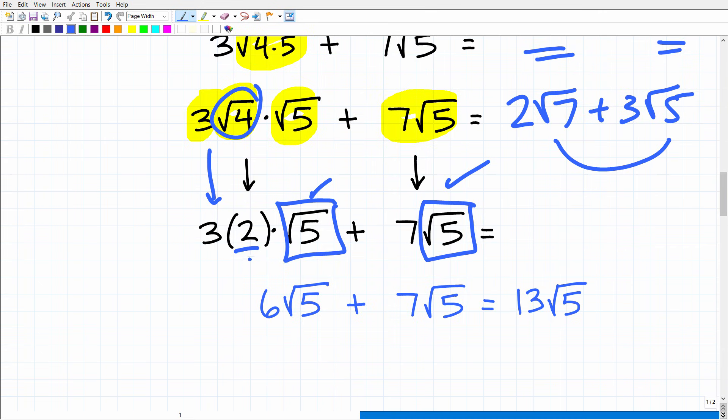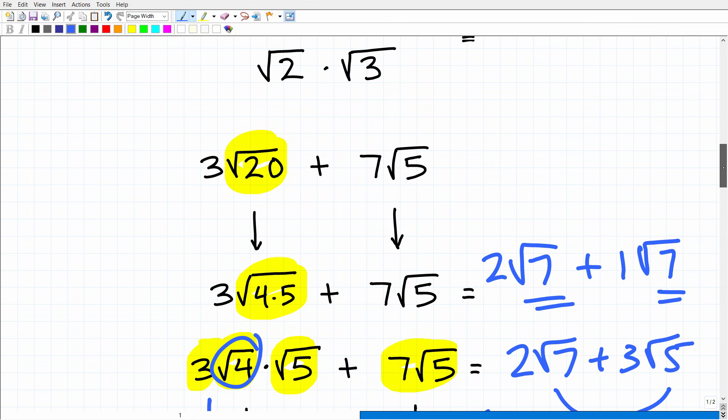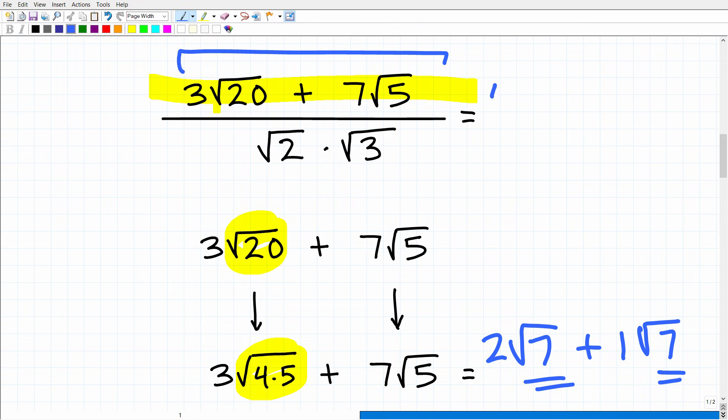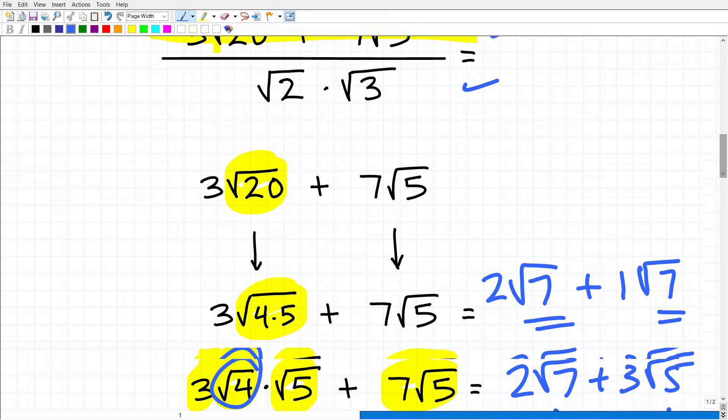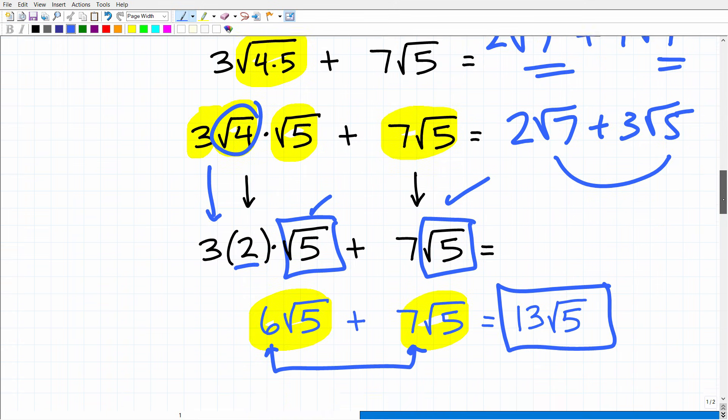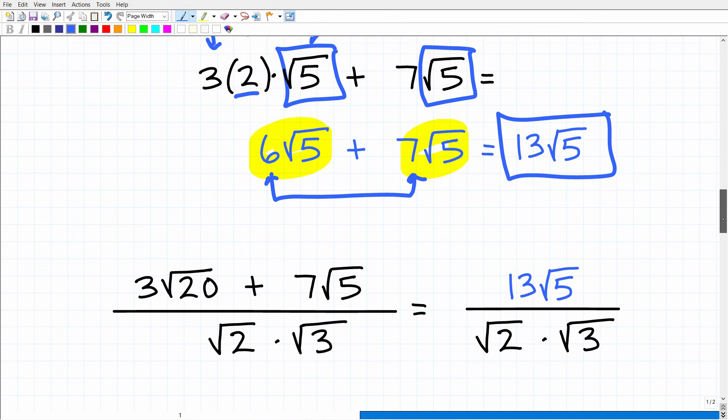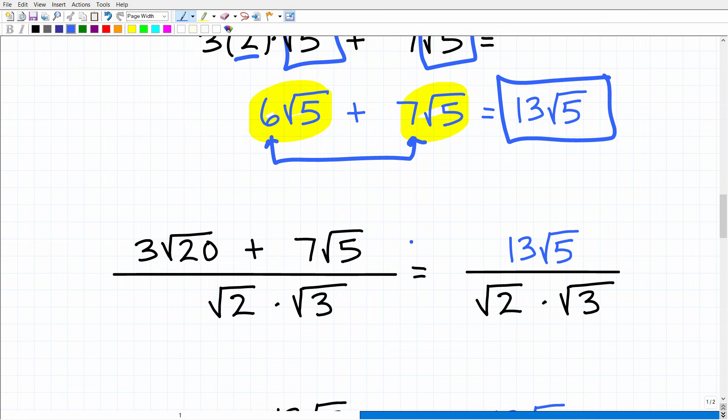All right, so let's go ahead and proceed. So we have 3 times 2, which is 6 square root of 5 plus 7 square root of 5. So all we need to do is add the numbers in front of the square roots, kind of like the coefficients and like terms. So 6 plus 7, of course, is 13. So now we have 13 square root of 5. All right, so we just simplified the numerator. Now we have to work on the denominator. But we have a lot more steps to go. So let's go ahead and continue on. Here is our problem. Again, we just worked on simplifying the numerator. That is 13 square root of 5.